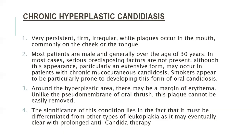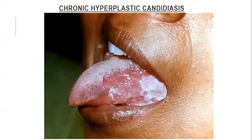Then comes chronic hyperplastic candidiasis: very persistent, firm, irregular white plaques occurring in the mouth, commonly on the cheek and tongue. Most patients are male, generally over 30, and a predisposing factor is not usually present, although the condition may occur extensively in patients with chronic mucocutaneous candidiasis. Smokers appear to be particularly prone. Around the hyperplastic area there are margins of erythema. Unlike the pseudomembrane of oral thrush, this plaque cannot be easily removed. The significance is that it must be differentiated from leukoplakia, which is pre-malignant, and it eventually clears with prolonged anti-Candida therapy.